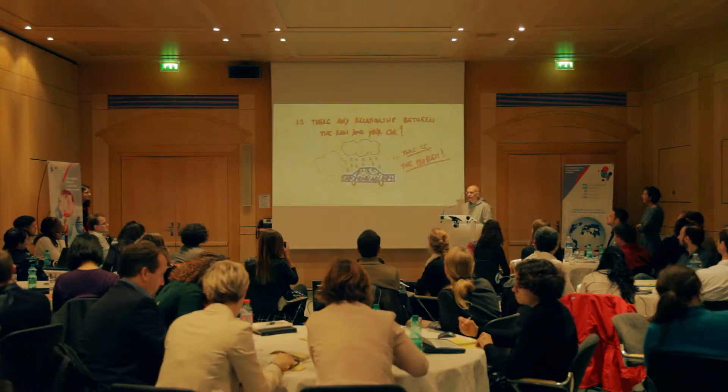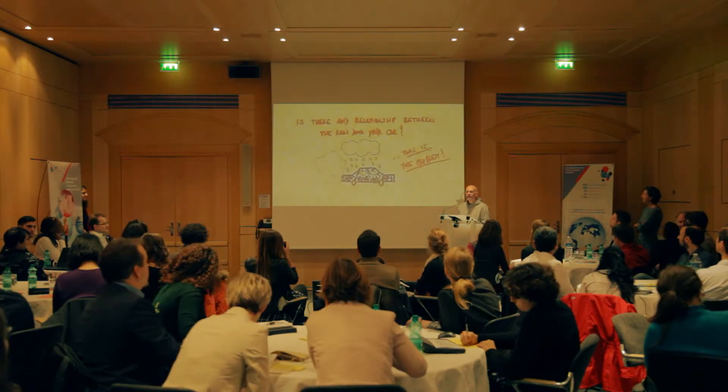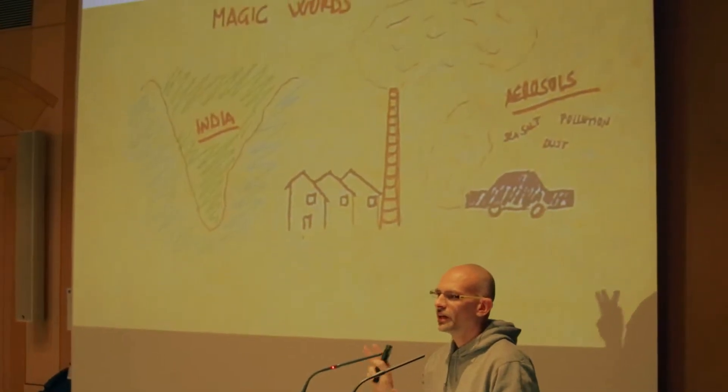I'm Riccardo and I will talk about monsoon predictability. Is there any relationship between the rain and your car? The problem of my project is to understand if the presence of small particles in the atmosphere can affect rainfalls. There are two magic words: India and aerosols. Aerosols is the word we use for defining small particles in the atmosphere, which can be pollution, sea salt, dust, or something like that.